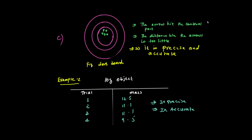In another case, if the darts are close to each other but not at the central part, the result is precise but not accurate. The distance between arrows is close. If the darts are close to each other and also at the central part, this is both precise and accurate.